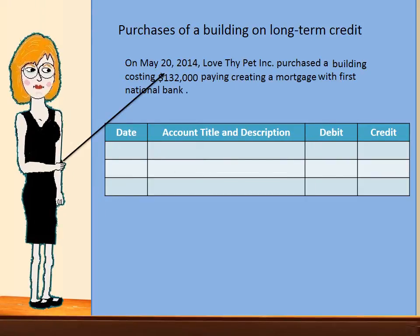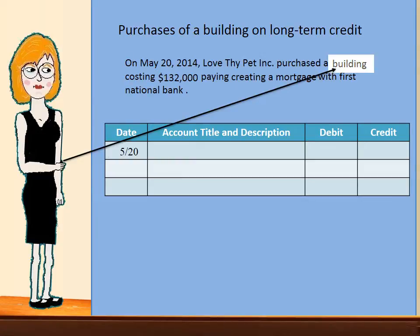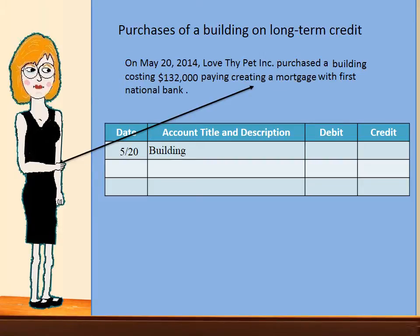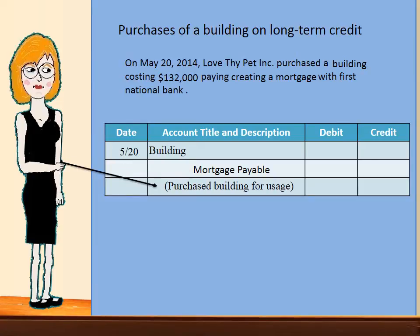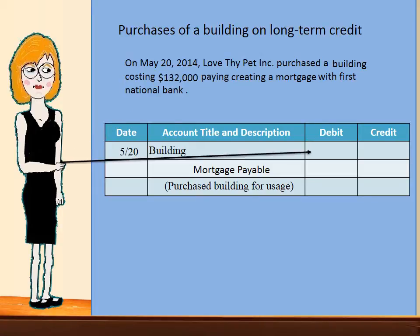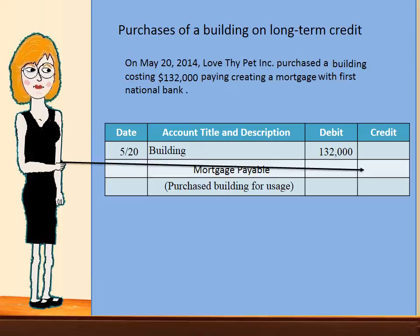Now let's look at the purchase of a building on long-term credit. The date is May 20th, so we will put 5-20. We purchased a building, which is an asset, so we are increasing the building account. And we created a mortgage, which is a liability, and therefore we will credit the liability account mortgage payable. Our description will be 'purchase building for usage.' The amount will be $132,000. We will increase the building asset account for $132,000, and we will also increase the liability account for the same $132,000.